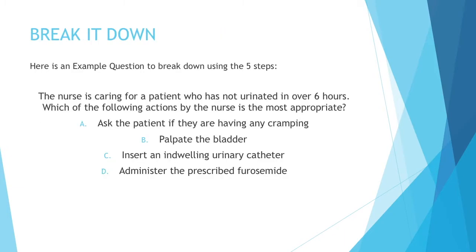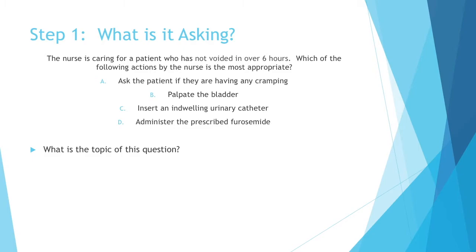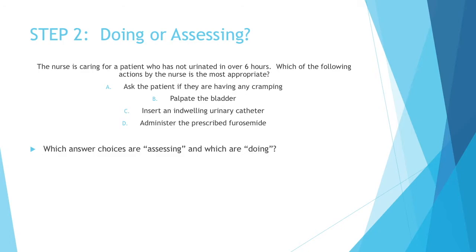Here's an example question broken down using the five steps. 'The nurse is caring for a patient who has not urinated in over six hours. Which of the following actions by the nurse would be the most appropriate?' Answer choices: A) ask the patient if they're having any cramping, B) palpate the bladder, C) insert an indwelling urinary catheter, or D) administer the prescribed furosemide. Step one: what is this question asking? The things that stick out are that someone's not voiding, and it's been over six hours. That's the topic — the patient hasn't voided in over six hours, which seems like a long time.